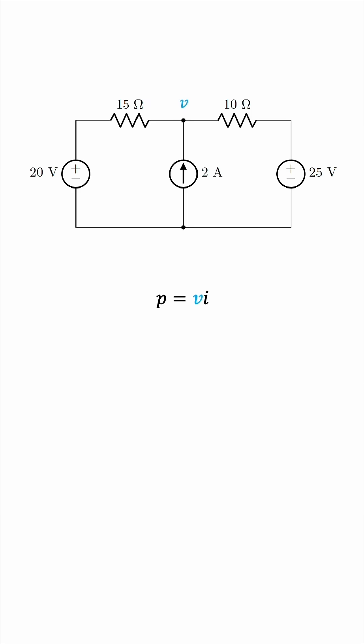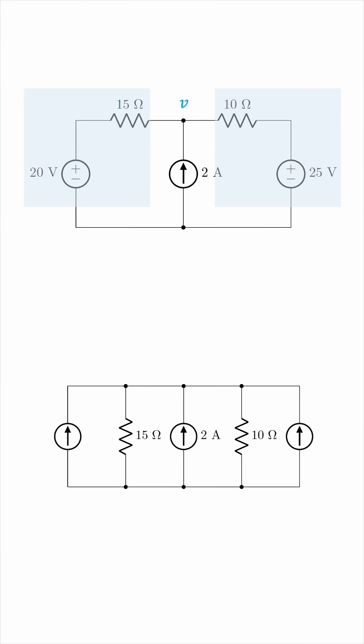I see two voltage sources in series with resistors. So, I'm going to use source transformation to convert this circuit into the following. We'll have three current sources and two resistors in parallel.